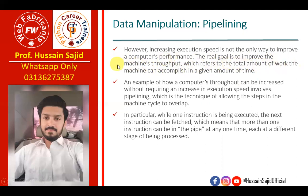The real goal is to improve the machine's throughput, which refers to the total amount of work that a machine can accomplish in a given time. That means the total amount of work completed in a given time — that's the throughput. Our main purpose is to improve the amount of work done in a given time.